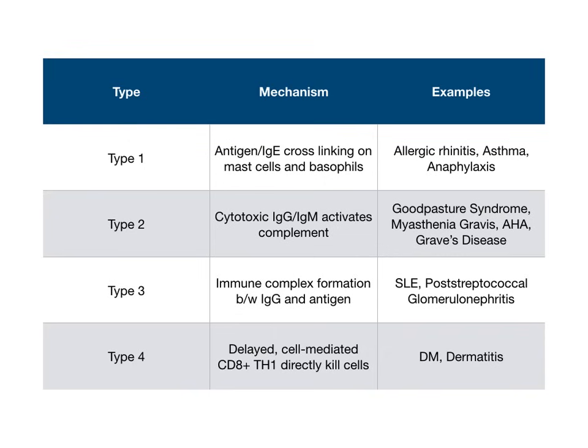The mnemonic that you're going to use today is ACID. The A goes with type 1, C with type 2, I with type 3, and D with type 4. Just like there are four types, each of those letters corresponds to one of these types of hypersensitivity. Let's go through these one at a time — I'll explain the normal pathophys and overlay the mnemonic so you better recall all of this information.